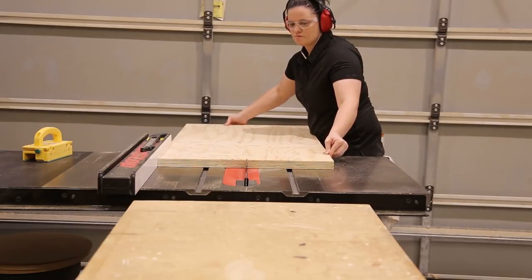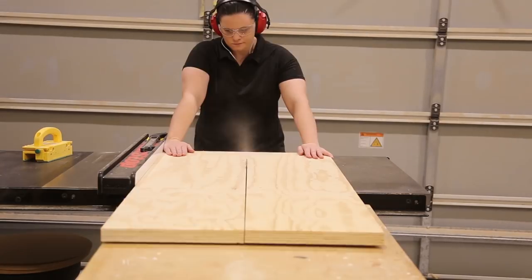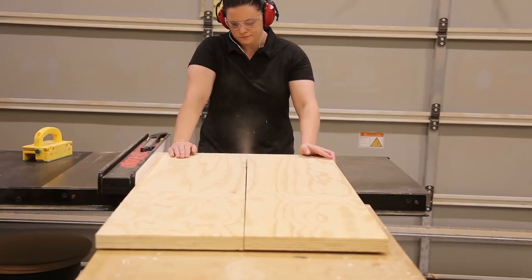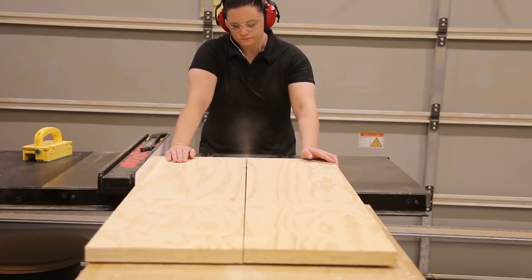I then ripped the plywood in half and then I could cross cut them on the miter saw. I left the pieces a little oversized at this point so I could dial the fit in at a later step.